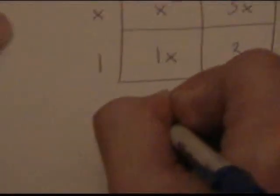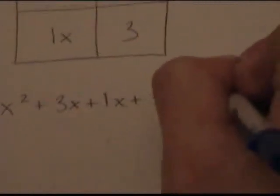Now you add all those together, giving you x squared plus 3x plus 1x plus 3. Or simplified, x squared plus 4x plus 3.